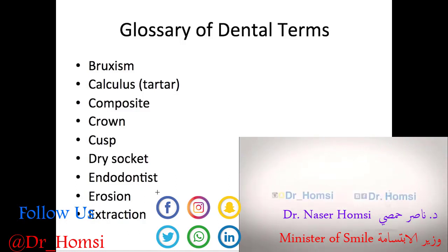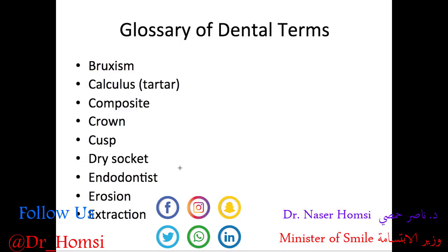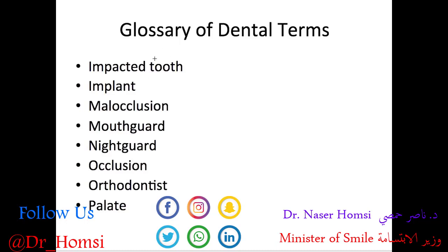Erosion is the loss or wearing of dental hard tissue by acids not caused by bacteria. An extraction is another name for the removal of all or part of a tooth. An impacted tooth is a tooth blocked from erupting through the gums by another tooth, bone, or soft tissue. An implant is a device placed into the jawbone to replace a missing tooth and hold a prosthesis such as a crown, bridge, or denture. Malocclusion is when the upper and lower teeth aren't lined up properly to bite and chew.